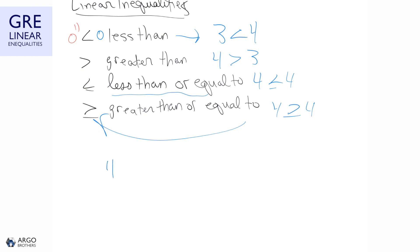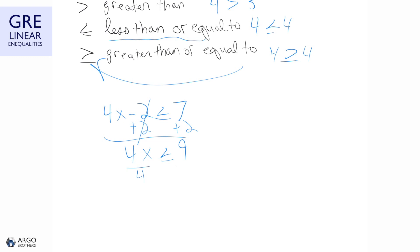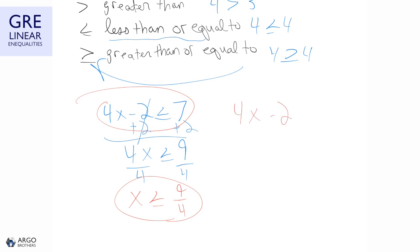Using these inequality signs we can write linear inequalities such as 4x minus 2 is less than or equal to 7. To solve this, you solve it like a regular linear equation: add 2 on both sides to get 4x is less than or equal to 9, then divide both sides by 4 to get x is less than or equal to 9 over 4. Any x value less than or equal to 9 over 4 satisfies this inequality.